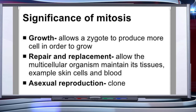Now let's talk about the significance of mitosis. Mitosis is responsible for growth — it allows a zygote to produce more cells in order to grow. It is also responsible for repair and replacement, allowing multicellular organisms to maintain their tissues, such as skin cells and blood cells. Additionally, mitosis is responsible for asexual reproduction, that is, the formation of clones.